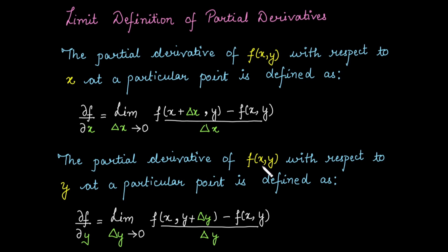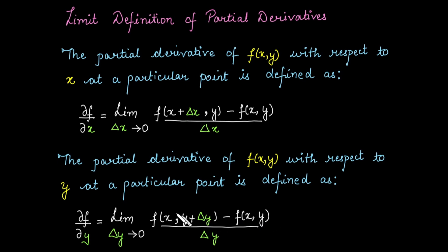Whereas the partial derivative of a function with respect to y at a particular point is defined by this form. In this case, we are looking for the change in the function with respect to y, keeping x as a constant, by the small amount of delta y.